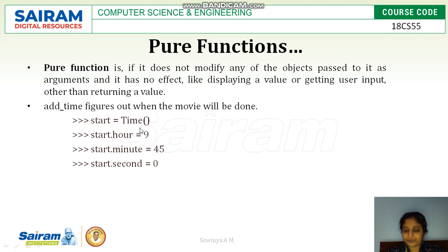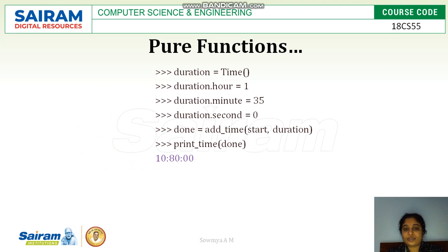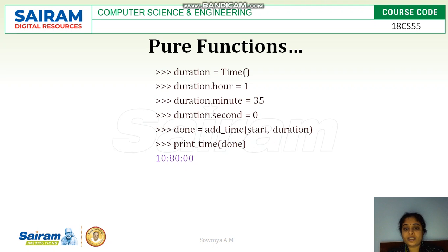Here is the addtime function example: starttime is set to 9 hours, 45 minutes, and 0 seconds. Duration is 1 hour, 35 minutes, 0 seconds. If we call addtime with start and duration, we get done — which prints the result as 10 hours, 80 minutes, and 0 seconds. It does not change the value of the start or duration objects; it only updates the result in the done object and returns it.